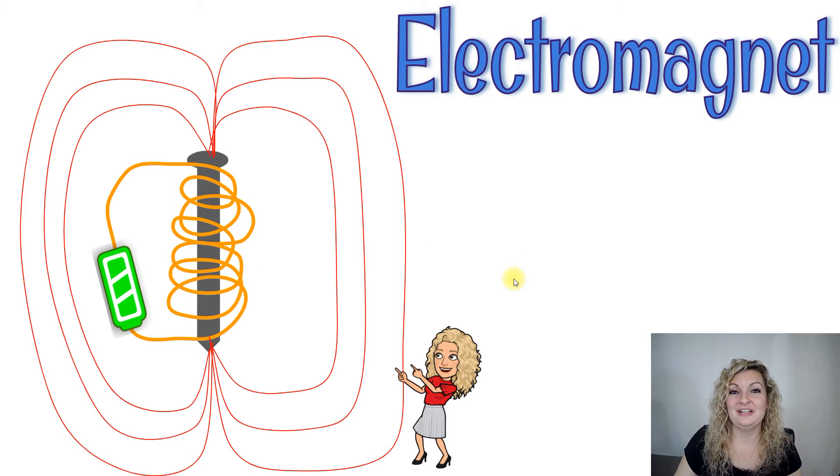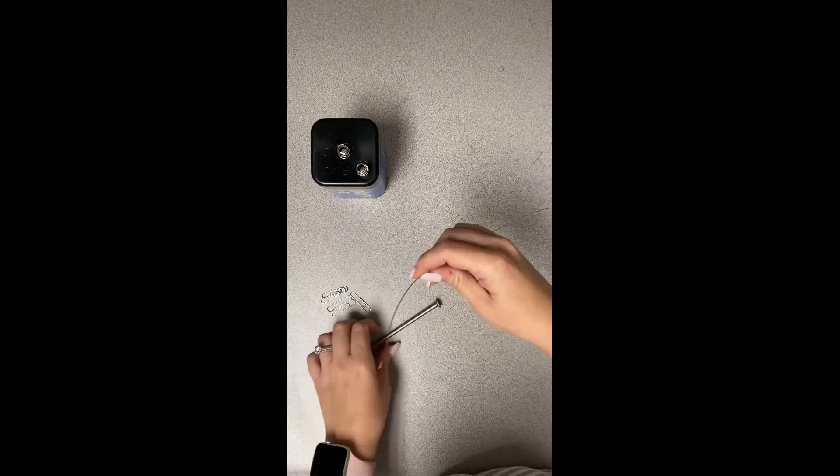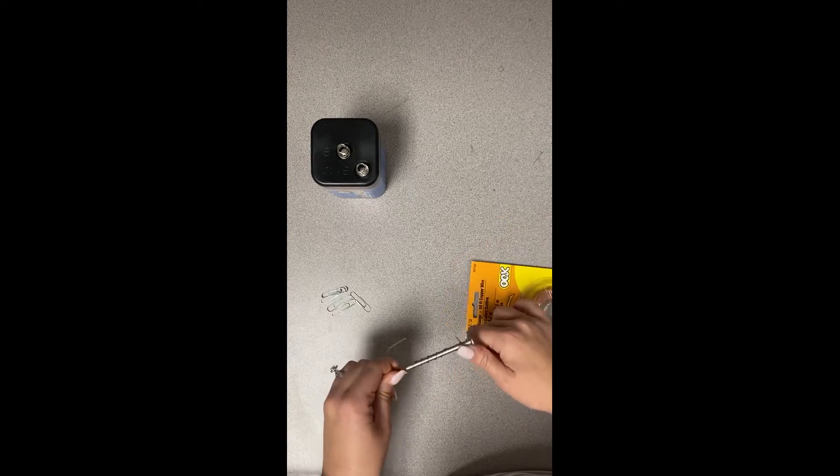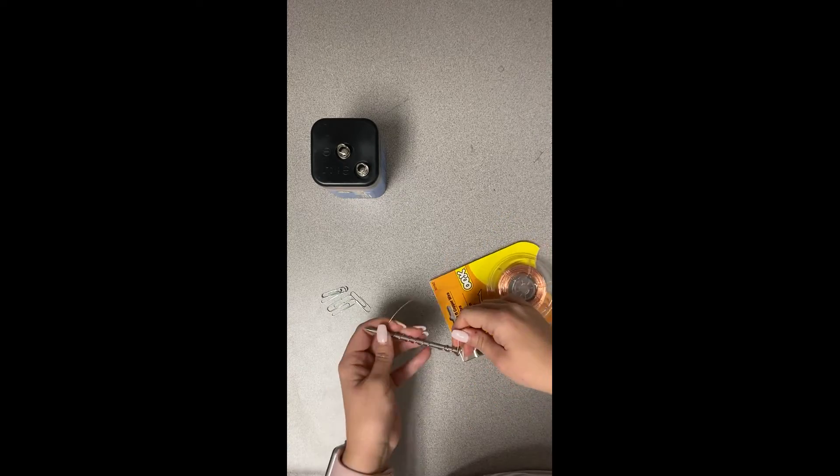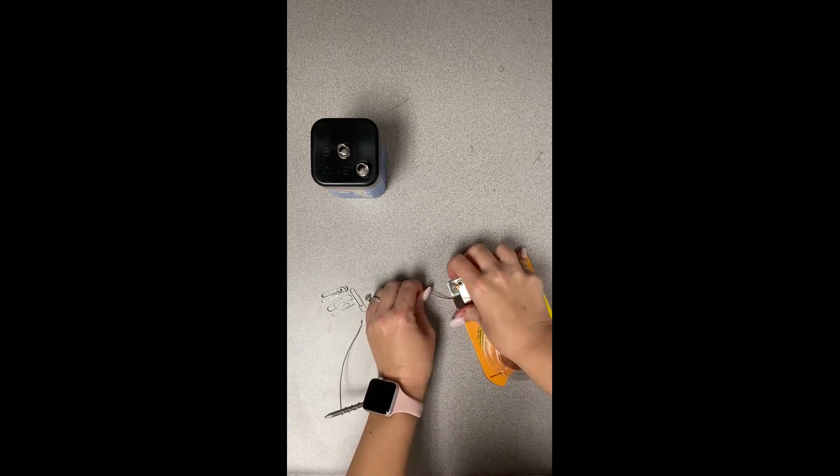Watch this video and see how I make it. An electromagnet is really easy to make. Take your copper wire, leave a couple inches extra at the end, and coil it around your iron core, which in this case is our nail. Continue it all the way to the end.